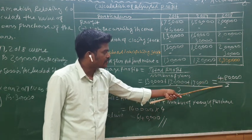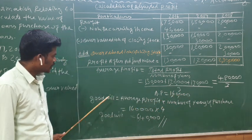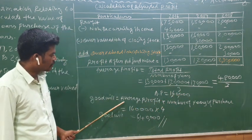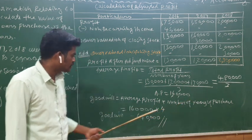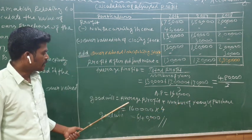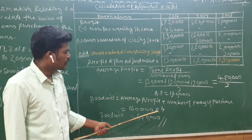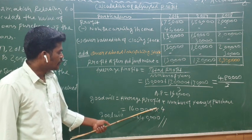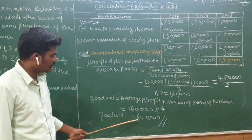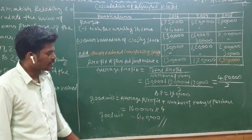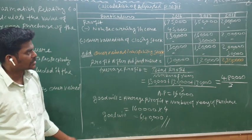Average profit is equal to total profit divided by number of years. Total profit is Rs. 4,80,000 divided by 3, which equals Rs. 1,60,000. Goodwill is equal to average profit multiplied by number of years of purchase, so Rs. 1,60,000 multiplied by 4 equals Rs. 6,40,000.